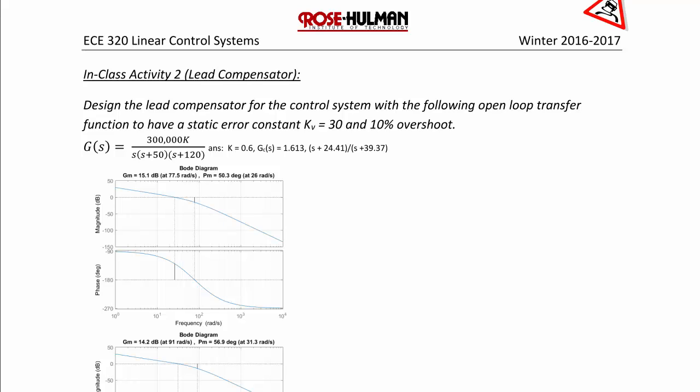So the first thing we're going to do is use the static error constant in order to find K. KV is equal to the limit as S approaches zero of S G of S which is equal to 300,000 K over 50 times 120 and that equals 30. So when we solve, K is equal to three-fifths.